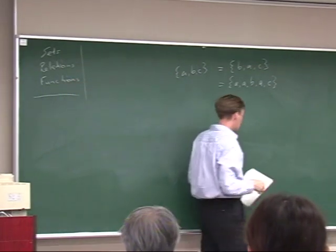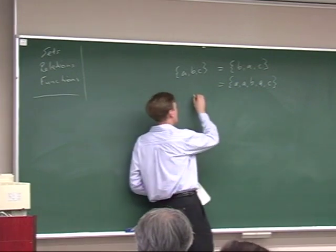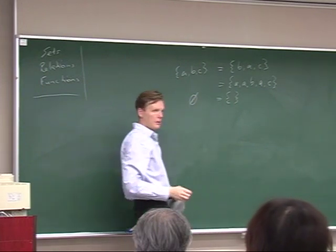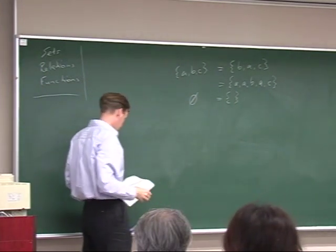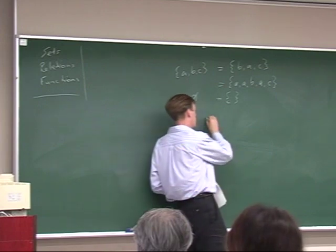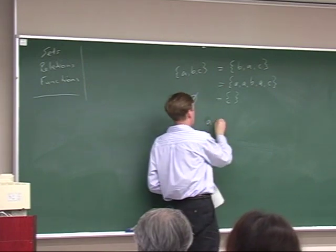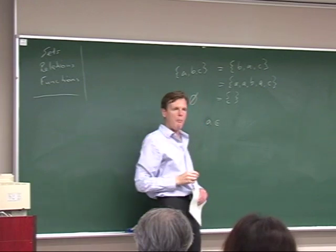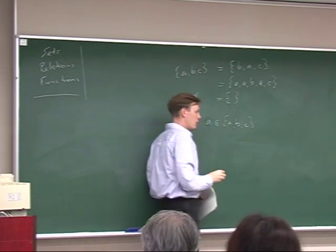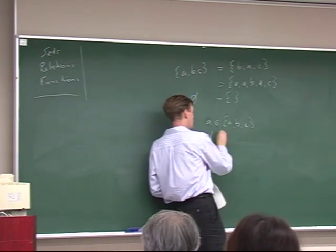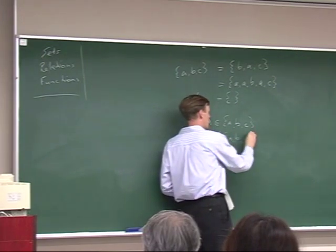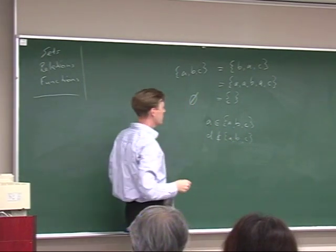And then we have the empty set, which contains nothing. We write things like 'A is an element of {A, B, C}' — it's in there — and of course D is not an element of {A, B, C}. So far, so good. Basic notation.